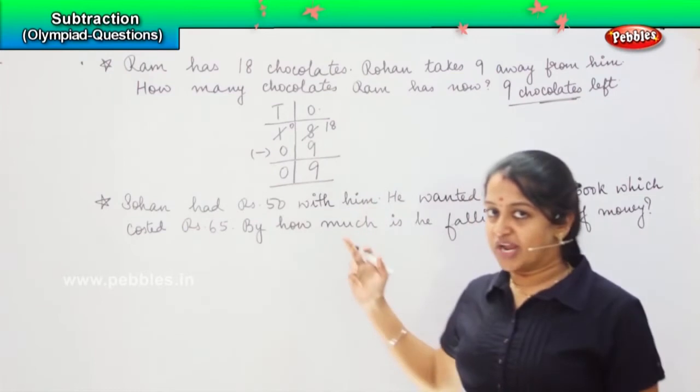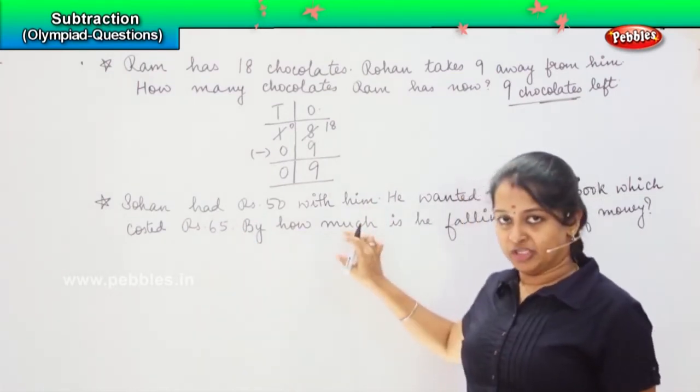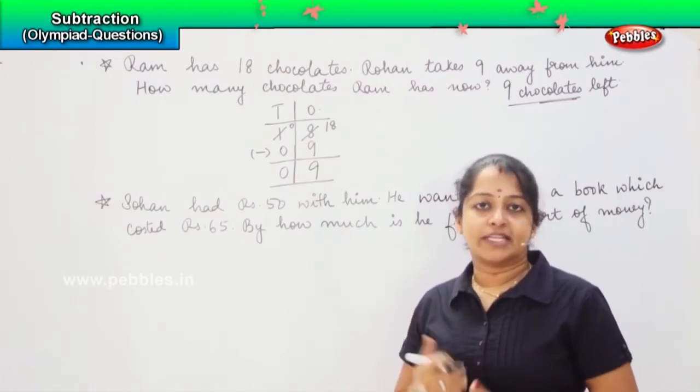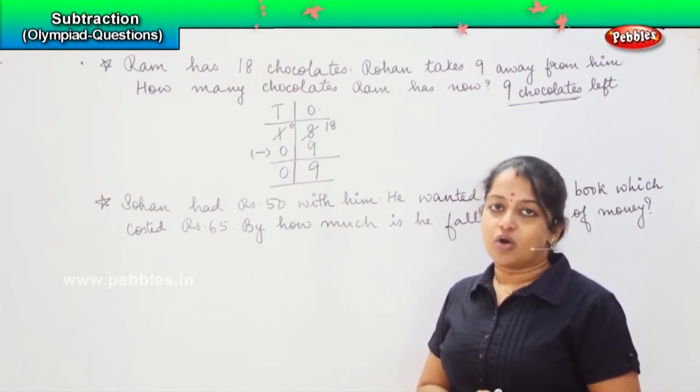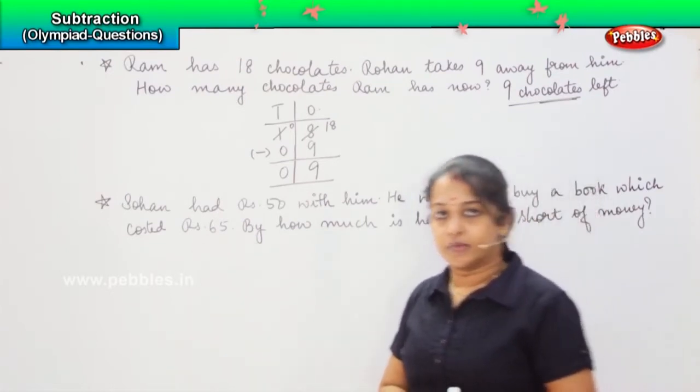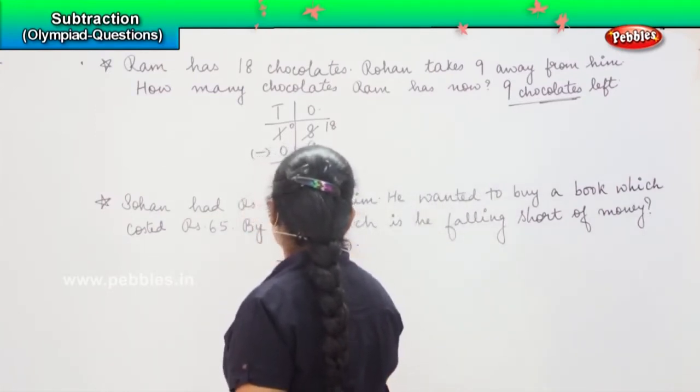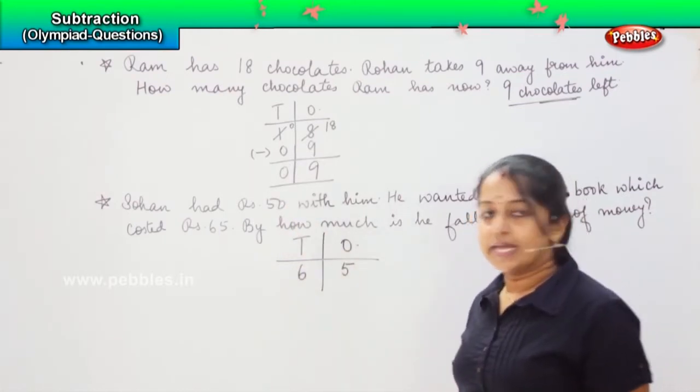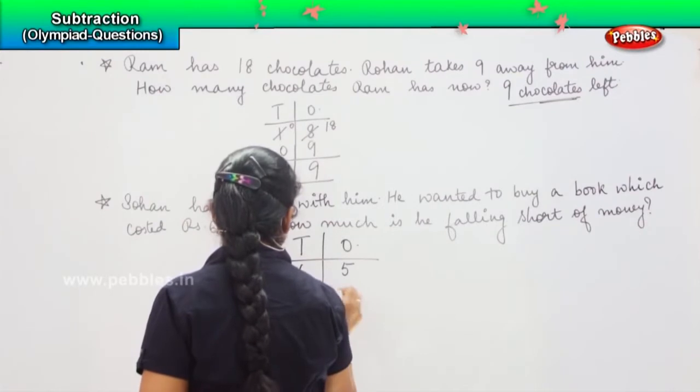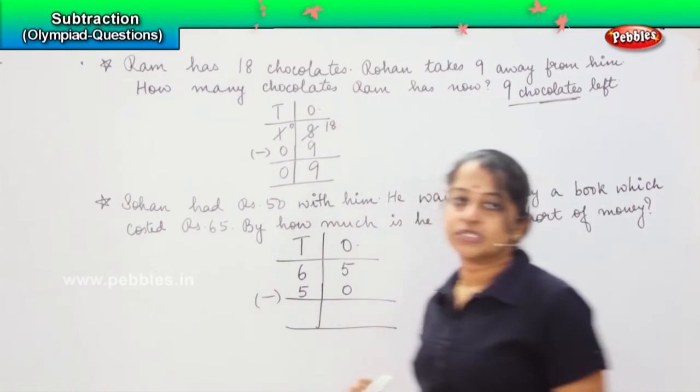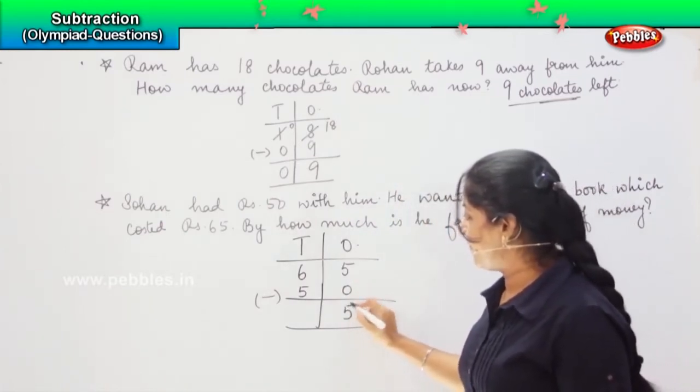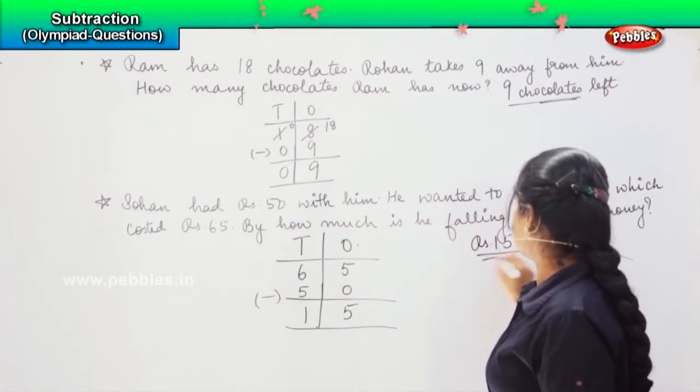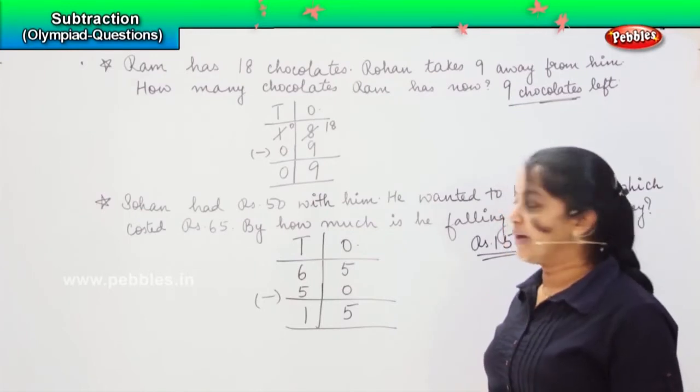So, always in subtraction, you have to keep in mind that the bigger number will be the first one and then comes the smaller. In subtraction, always from the higher number, you will be reducing the lower number. So, here first tens, ones. The bigger number here is 65. So, we will write down here 65. What is the amount which Sohan has in hand? He is having 50 rupees. So, 5 minus 0 is 5 and 6 minus 5 is 1. So, he needs to fetch extra 15 rupees in order to purchase this book. Is it clear children?